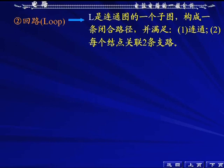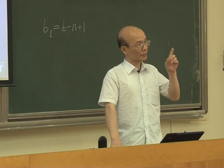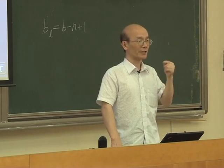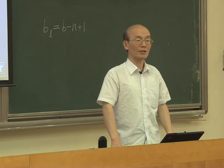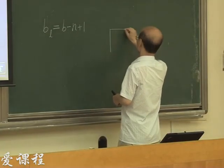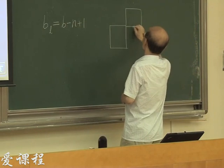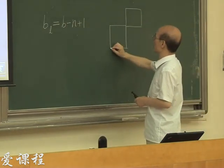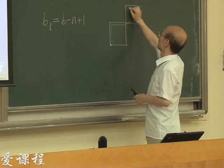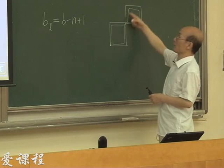连枝数对应着独立回路的个数。回路L也是连通图的一个子图，它构成了一条闭合路径，满足：第一，回路是连通的；第二，每个节点关联的两条支路——除起终节点外其他节点只能经过一次。这和每个节点和两条支路相连是一样的意思。比如说像一个闭合路径，如果某个节点连接了四条支路，就不能叫它回路，因为该节点经过了两次。